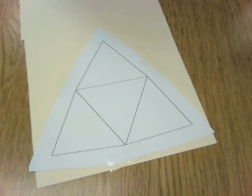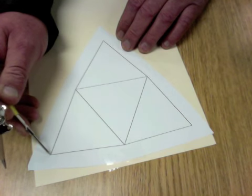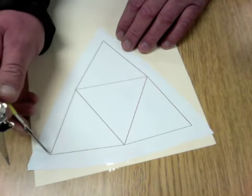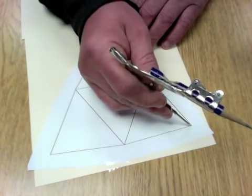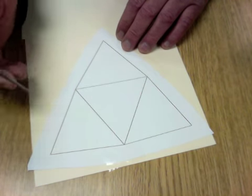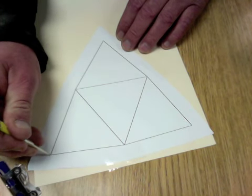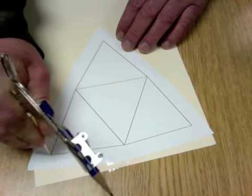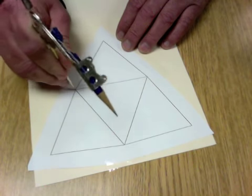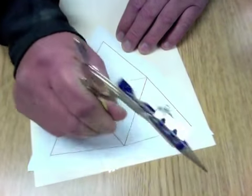And now take a compass, a straight pin, anything that comes to a point, and at every one of these spots where the lines intersect - there's one, two, three, four, five, six of them - poke a very small hole at exactly the point where they intersect. Just poke through so it goes through the paper and through the file folder material. Poke all six of those holes, being as accurate as you can.